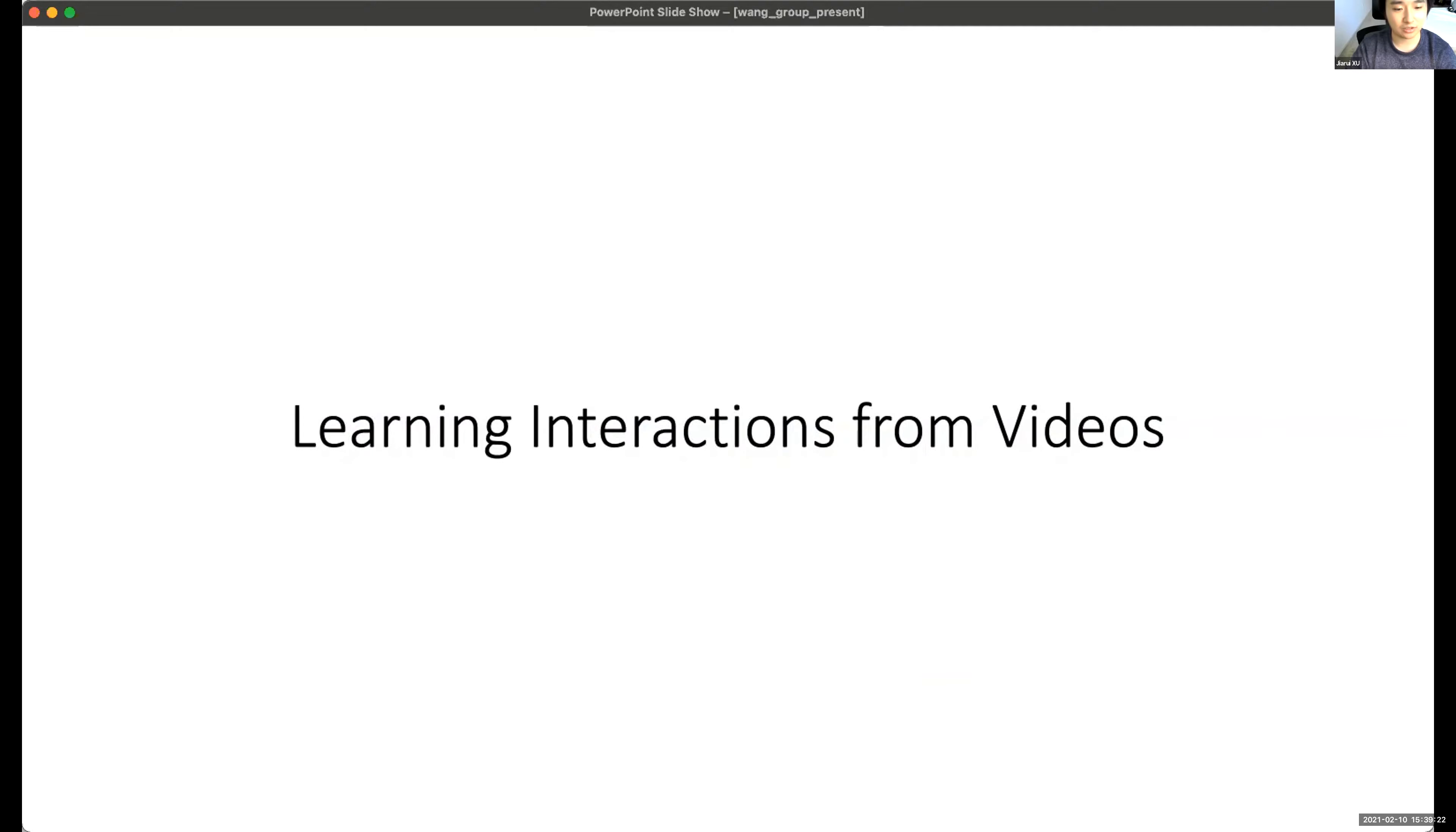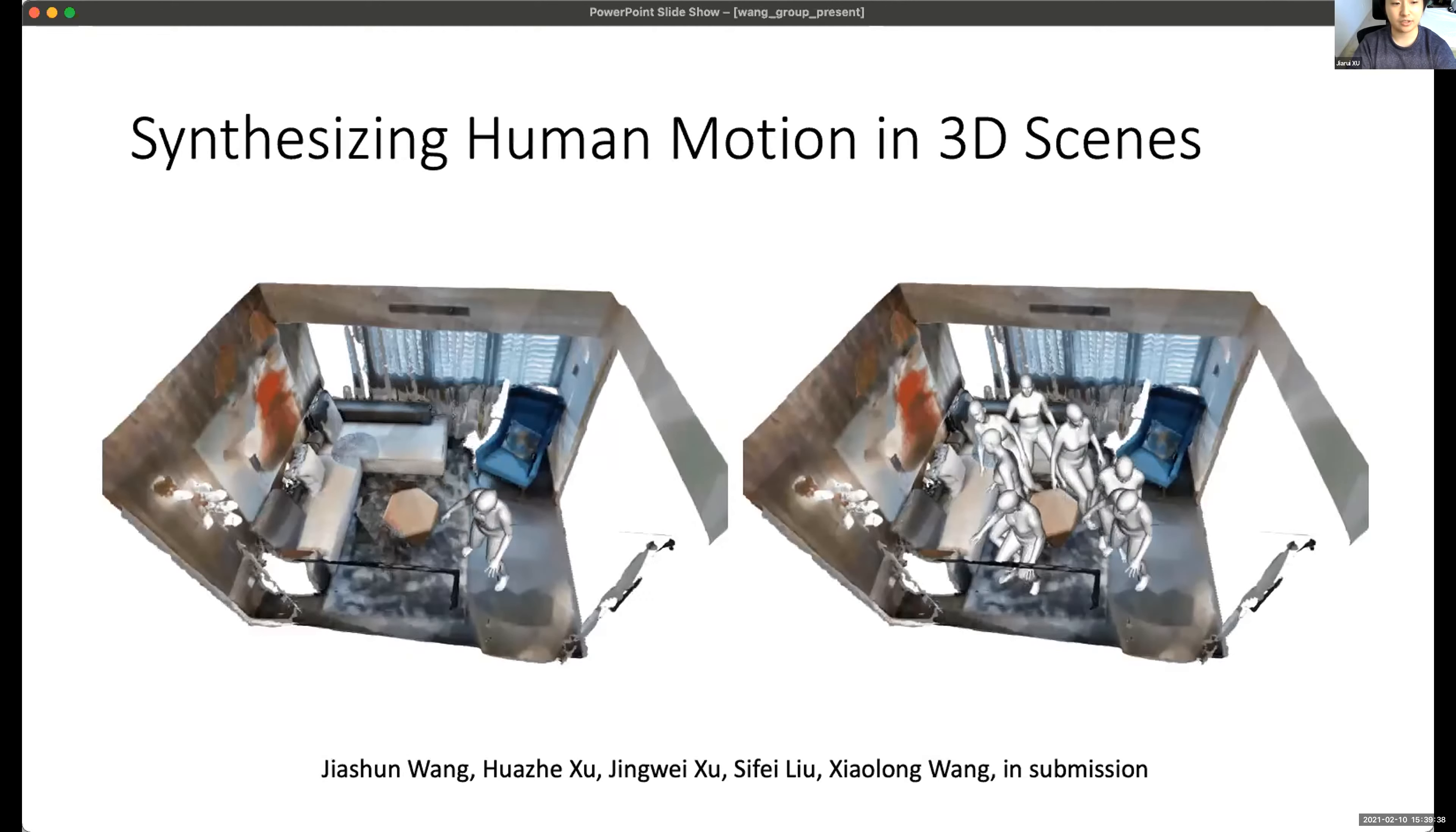And we also have some projects learning the interaction from videos. Interaction can be comprehended as how the human or the objects interact with each other. And there is some common sense in interacting with these objects or humans. In this project, we can synthesize the human motions in 3D scenes. For example, we can generate a human pose to navigate in a room without colliding with the obstacles or the walls.